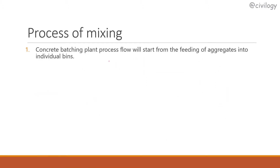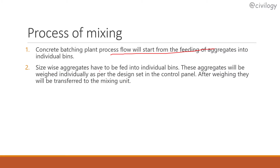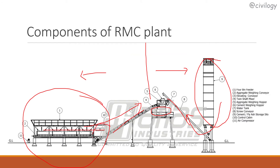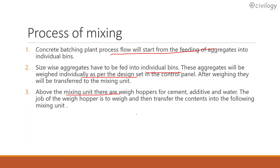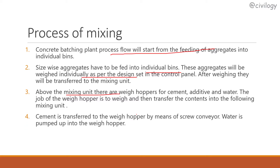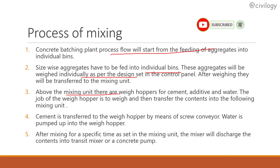The concrete batching plant process flow starts from feeding of aggregates into individual bins. Size-wise, aggregates are fed into individual bins and weighed individually as per the design set in the control panel — from which the total system is controlled. Above the mixing unit, there are weigh hoppers for cement, additive, and water. The weigh hopper weighs and transfers contents into the mixing unit. Cement is transferred to the weigh hoppers by screw conveyors, then water is pumped into the weigh hopper. After mixing for a specific time, the mixer discharges the contents into a transit mixer or concrete pump.